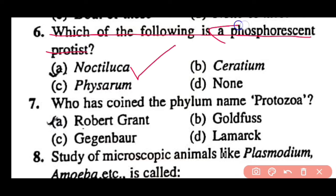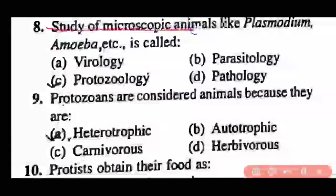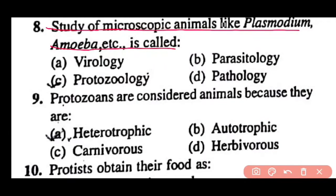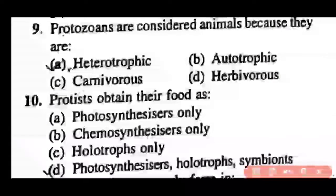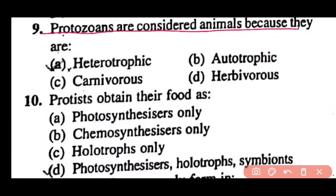Question 7: A study of microscopic animals like Plasmodium, Amoeba, etc. is called — virology, parasitology, protozoology, or pathology? Correct answer is option C. Protozoology is the study of microscopic animals such as Plasmodium. Question 9: Protozoans are considered animals because they are heterotrophic, autotrophic, carnivorous, or herbivorous? Correct answer is option A. Like animals, protozoans are also heterotrophic in mode of nutrition.